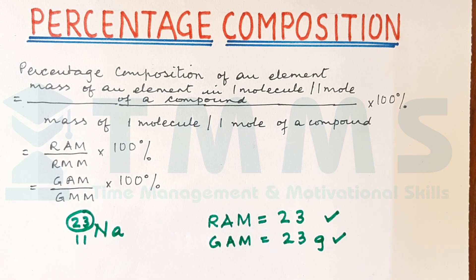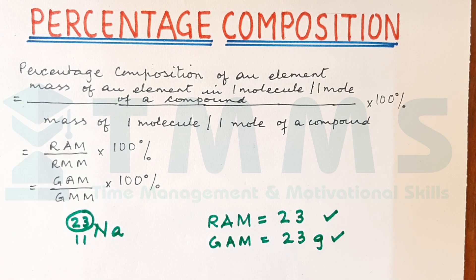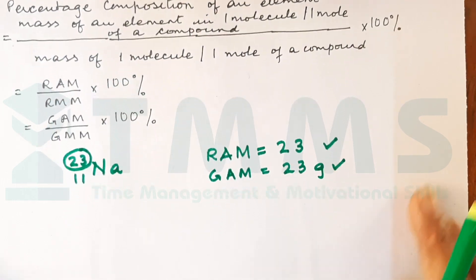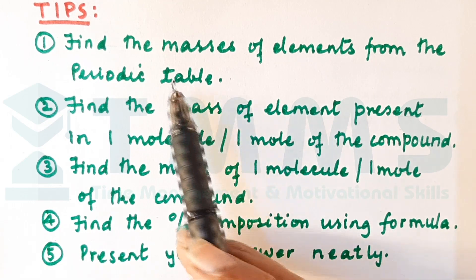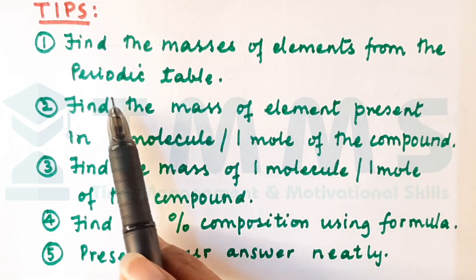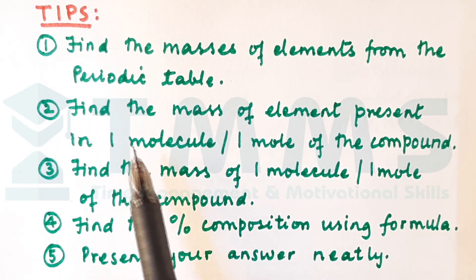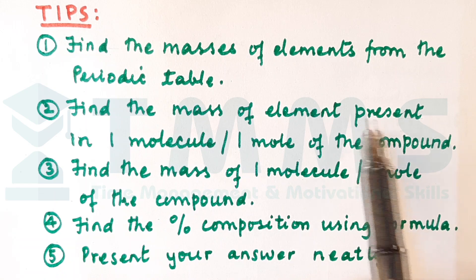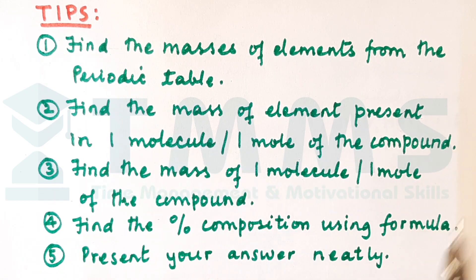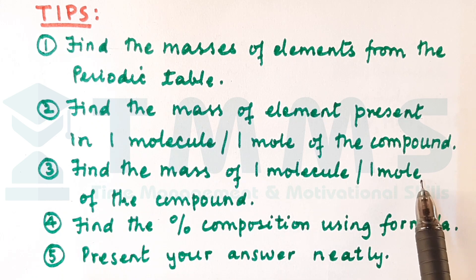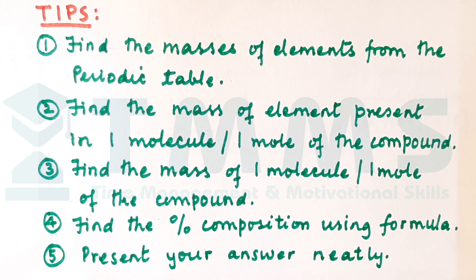To solve any problem on percentage composition, here are some tips to remember. Tip 1: find the masses of elements from the periodic table. Tip 2: find the mass of the element present in one molecule or one mole of the compound. Tip 3: find the mass of one molecule or one mole of the compound. Tip 4: find the percentage composition using the formula. Tip 5: present your answer neatly.